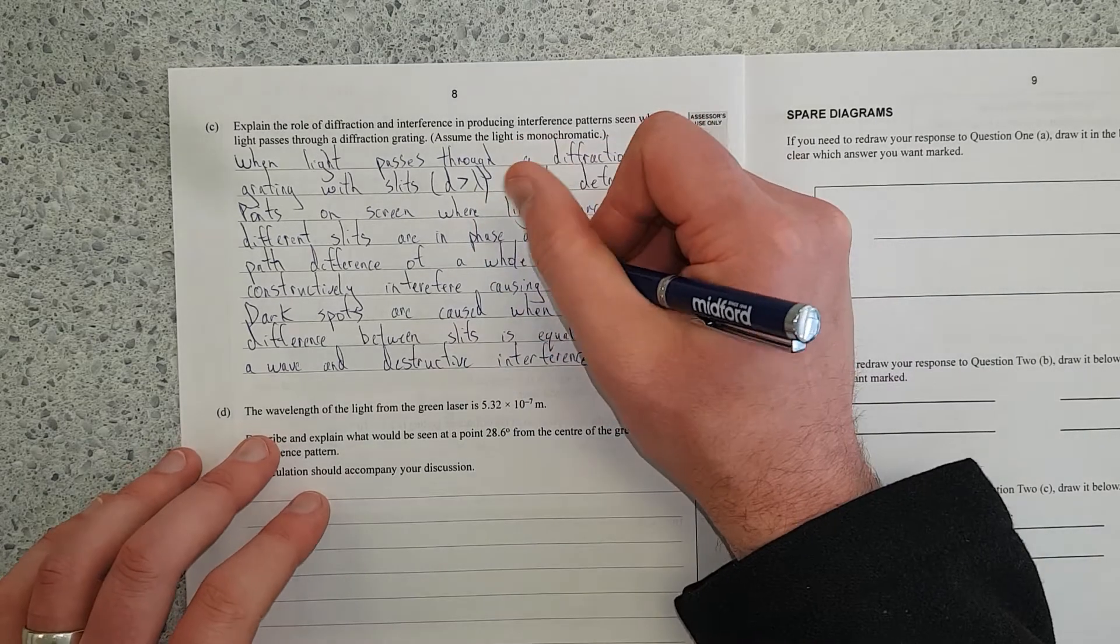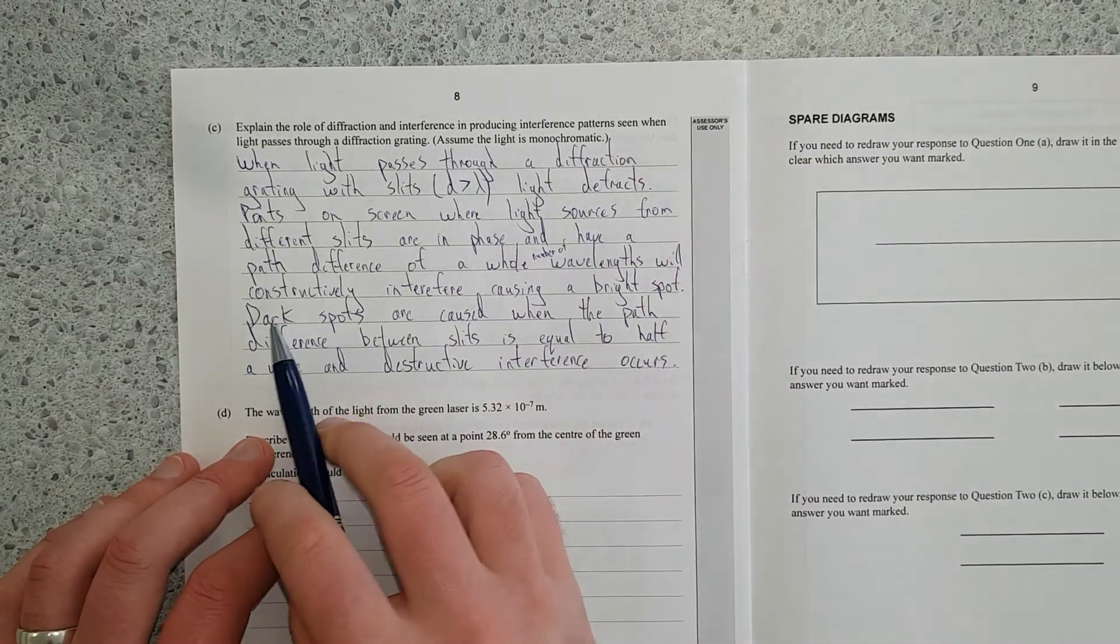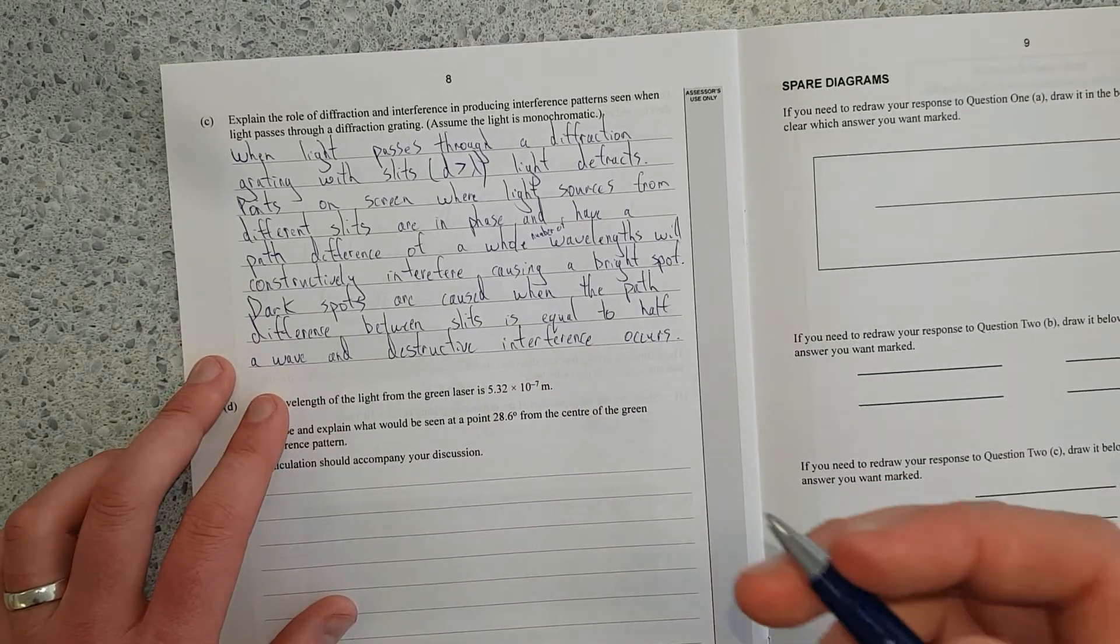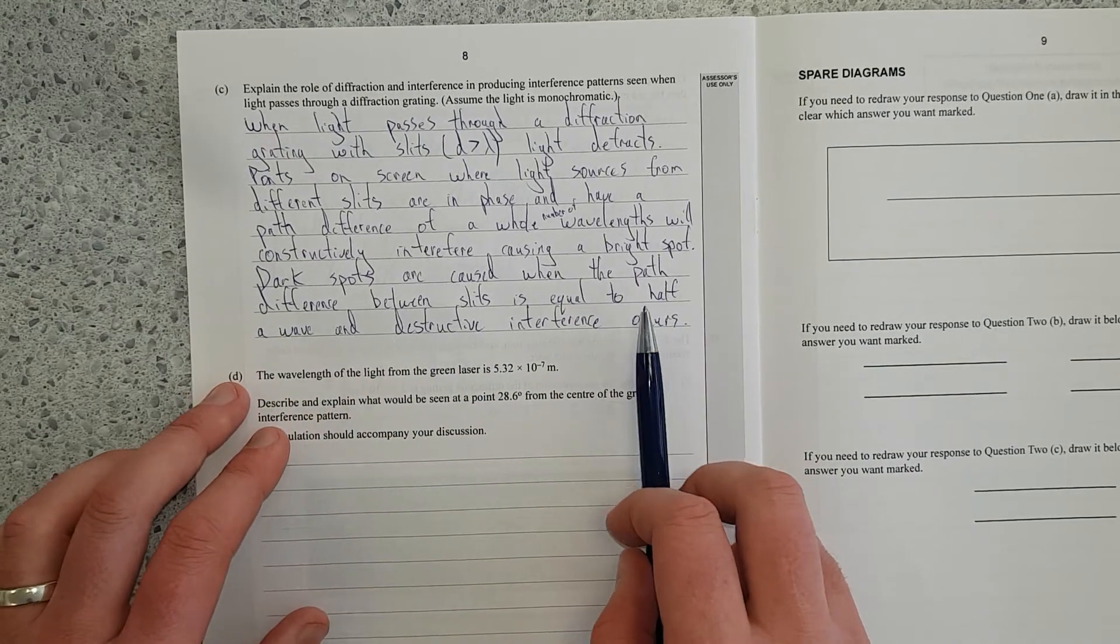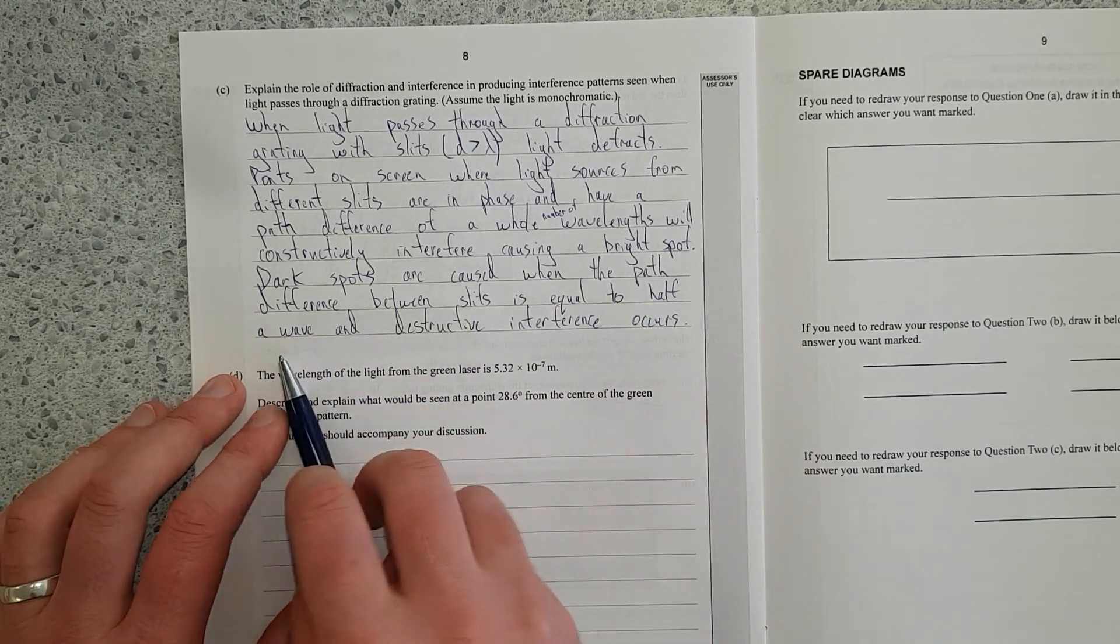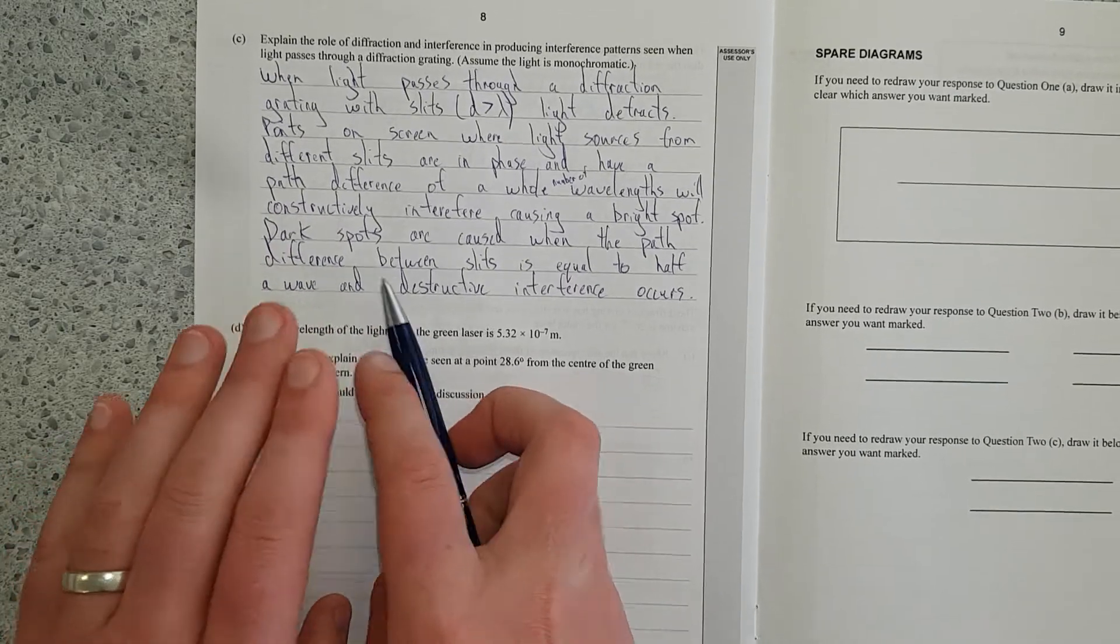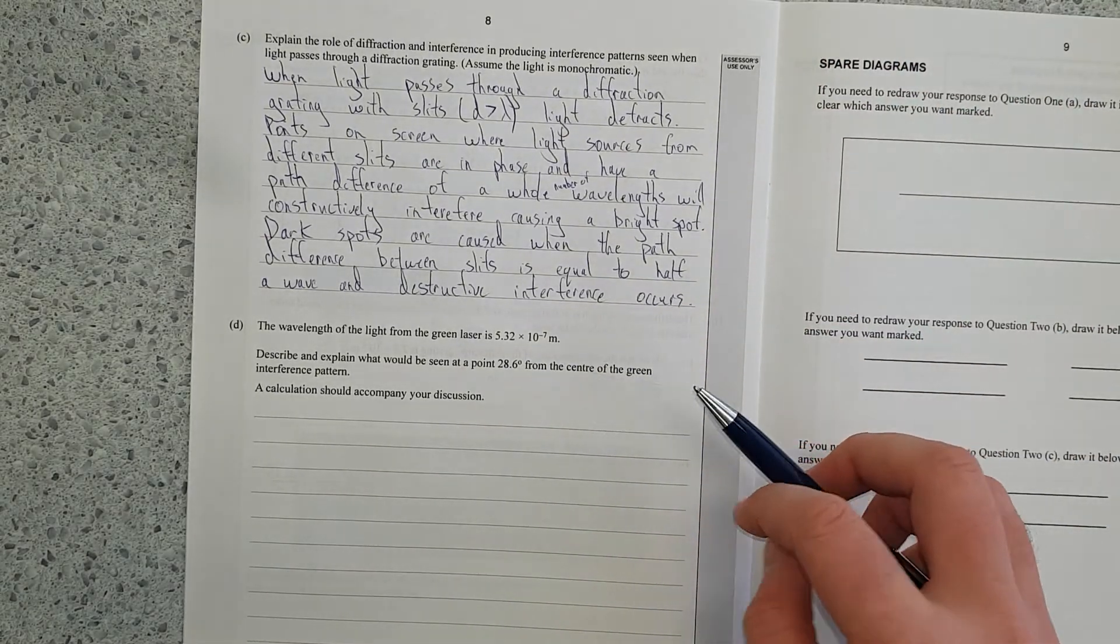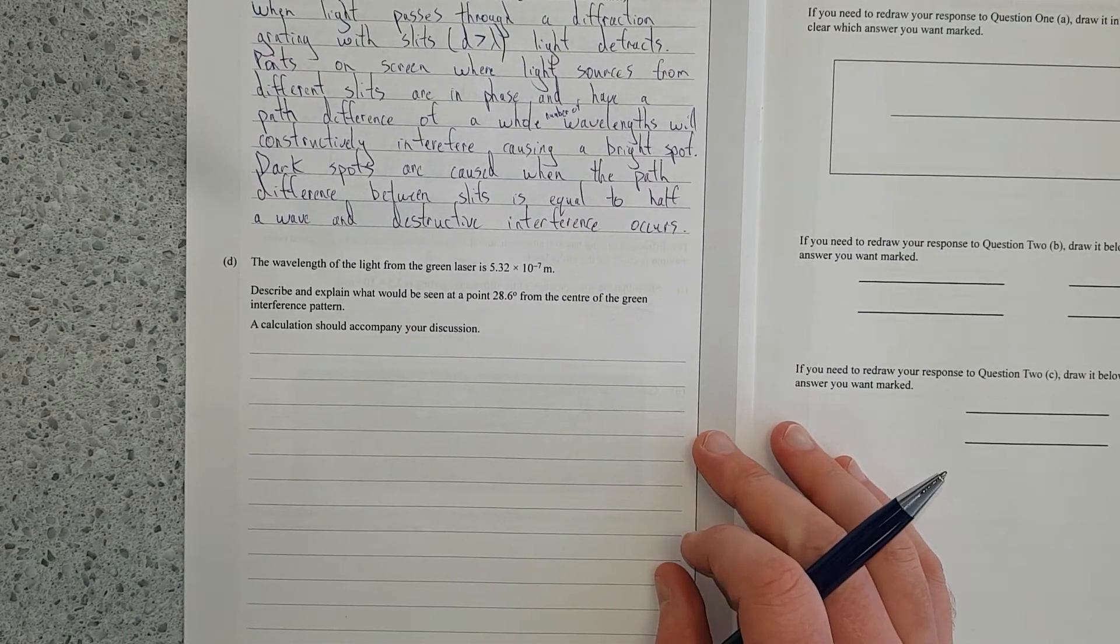Points on the screen where light sources from different slits are in phase and have a path difference of a whole number of wavelengths will constructively interfere causing a bright spot. Dark spots are caused when the path difference between slits is equal to half a wavelength, or one and a half, or two and a half - when they're out of phase by half a wavelength. You'll get destructive interference. You only need two points to get merit. That could have been an excellent answer.